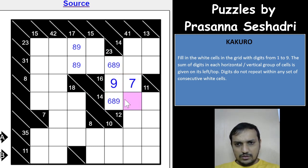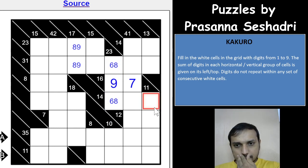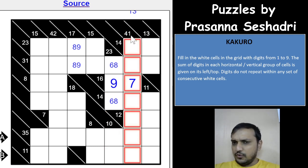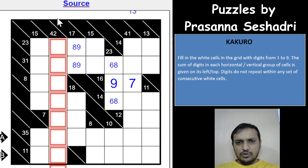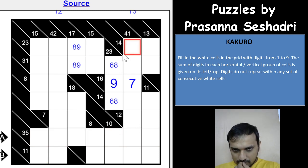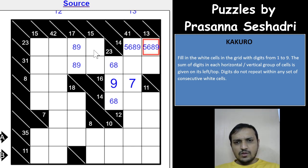Looking at the 41-sum with 7 cells: the total of 1–9 is 45, and the 4-sum with 2 digits must be 1 and 3 — so 1 and 3 are not possible in this column. For 42, 1 and 2 are not possible. For 14 with four cells, it must be 5, 6, 8, and 9 — same on the other side. And 15 gives 6, 7, 8, and 9.